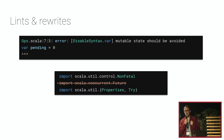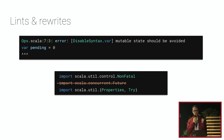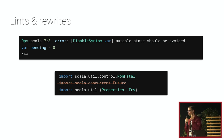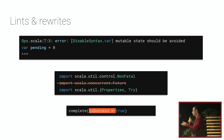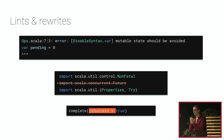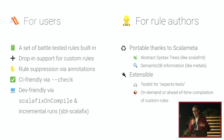Where ScalaFix gets very interesting is that it can not only generate diagnostics or lints but also affect your source code. A popular rule called RemoveUnused removes imports, local variables, and parameters that are not used. There's also NamedLiteralArguments, which adds parameter names wherever you have an invocation with a literal — just `true`, for example — for more readability.